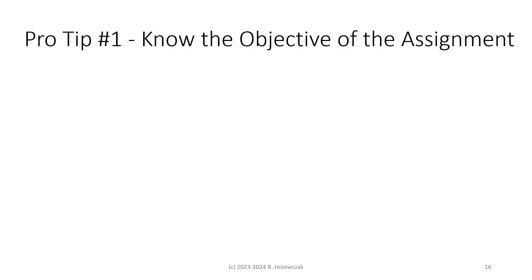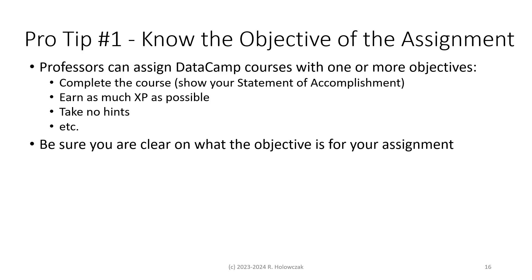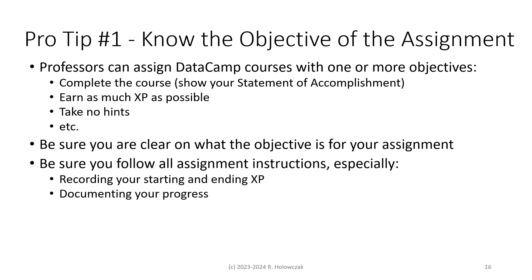Pro tip number one: make sure that you understand what the objective is of the assignment. Professors can assign DataCamp courses with one or more objectives. The objective could simply be to complete the course and show your statement of accomplishment, or it could be to earn as much XP as possible. Your professor might also restrict whether or not you're allowed to take hints. It's very important that you're clear on what the objective is for your assignment.